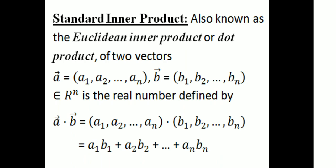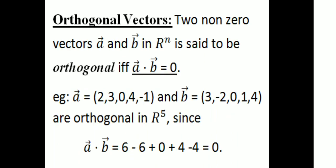What is the dot product? If vector a equals (a1, a2, ..., an) and vector b equals (b1, b2, ..., bn), then vector a dot vector b equals a1·b1 + a2·b2 + ... + an·bn. Now we will take two non-zero vectors such that vector a dot vector b equals 0.